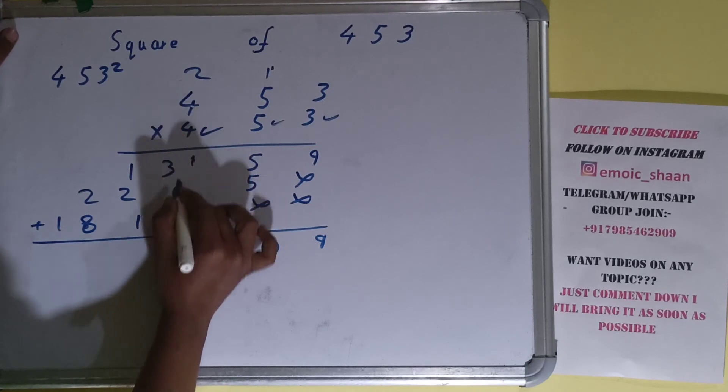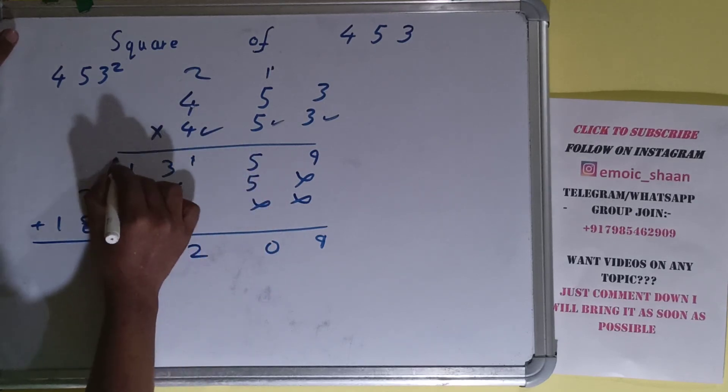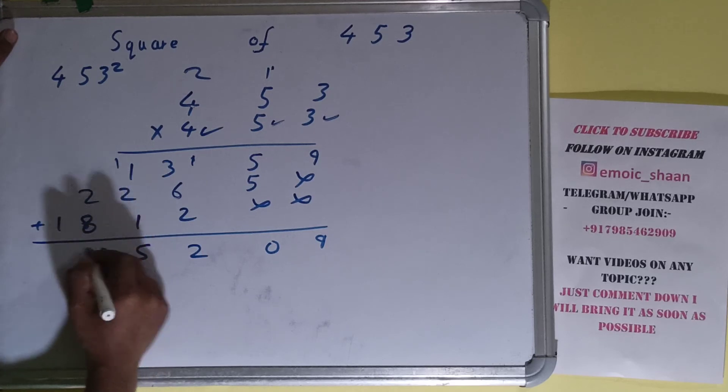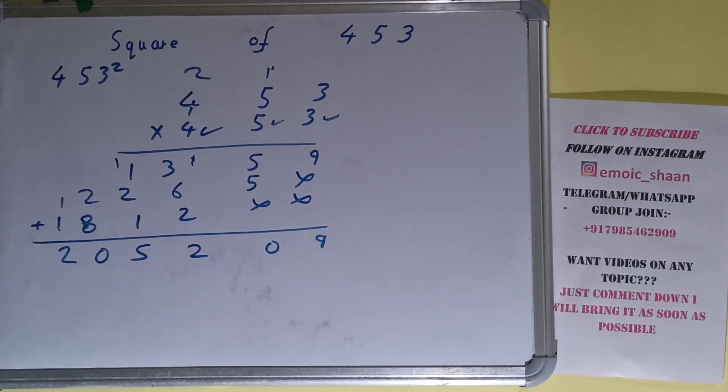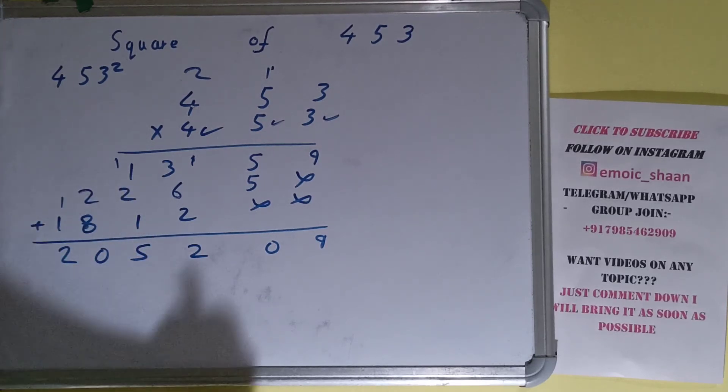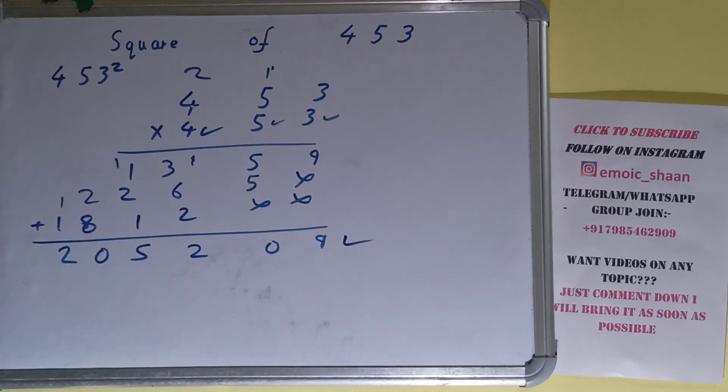One plus three is four, ten, twelve, one here. Two, four, five, zero, two. Okay, so the answer will be 205,209. That will be square of the number 453. So this is all.